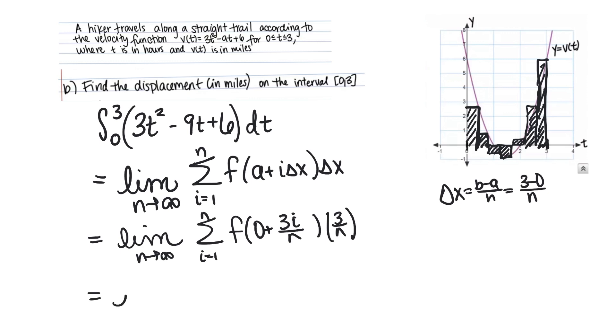So we are looking at the limit as n goes to infinity of the sum i goes from 1 to n. Now we're going to plug 3i over n in for t so we get 3 times (3i over n) squared minus 9 times (3i over n) plus 6. And then we put a 3 over n for our delta x. So this is the Riemann sum that we would like to compute.